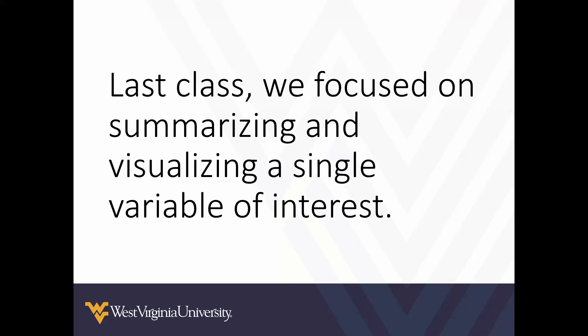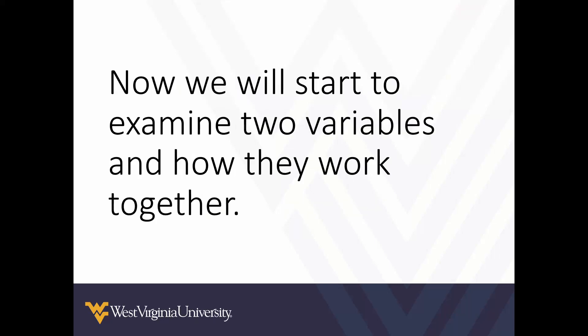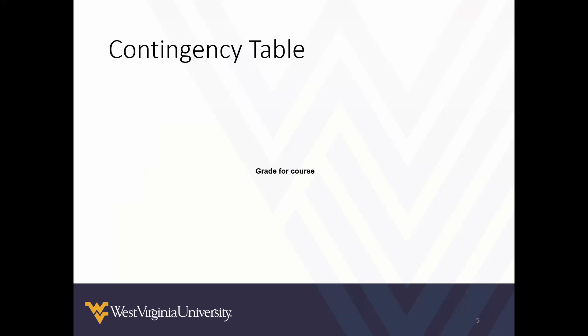Last class we focused on summarizing and visualizing a single variable of interest. With a single variable we had a dataset and we would either look at how to graph that single set or we calculated measures of central tendency and spread. Now we're going to start to examine two variables and see how they work together, starting with contingency tables.